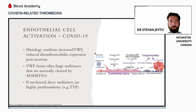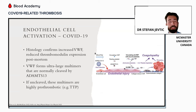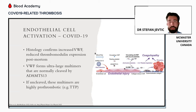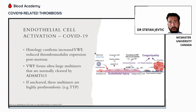Von Willebrand factor is housed in endothelial cells as an ultra-large multimer. Once released, it is quickly cleaved by ADAMTS-13 to prevent its prothrombotic state — but if uncleaved, it is quite potent in triggering thrombus formation and associated coagulopathy, as we've seen in TTP. In COVID-19 patients, not only do you have increased multimers of von Willebrand factor, but also a moderately reduced level of ADAMTS-13 activity — generally hovering around 30 to 50%, not as severe as TTP where it's less than 10%, but still suggesting some reduction with COVID-19 infection.